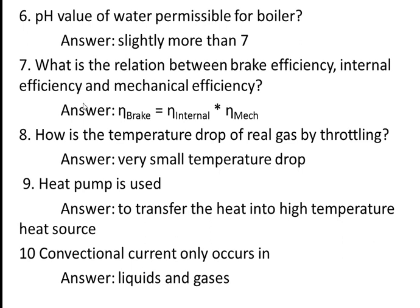Sixth question: pH value for water permissible for a boiler — answer is slightly more than seven. A pH value slightly more than seven means water should be alkaline in nature. pH value less than seven is acidic, and pH equal to seven is neutral. For a boiler, the water should be alkaline in nature.